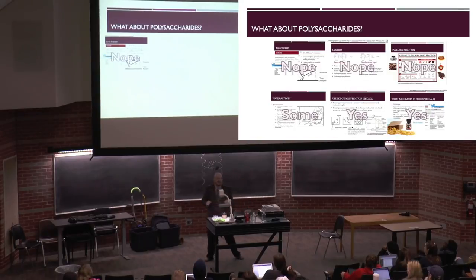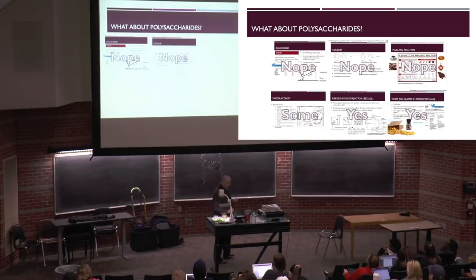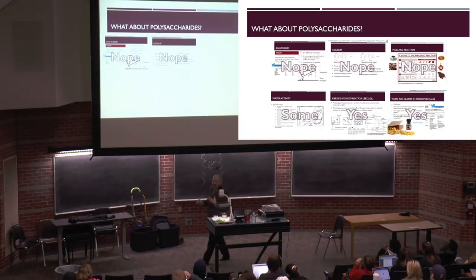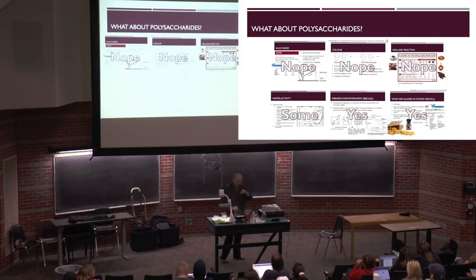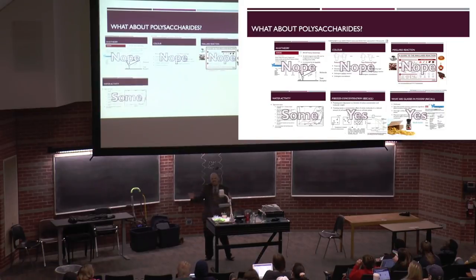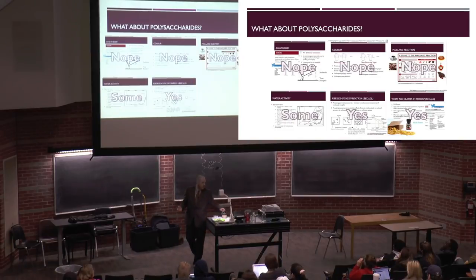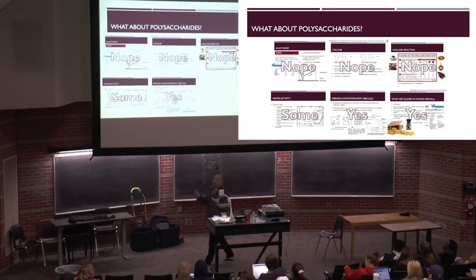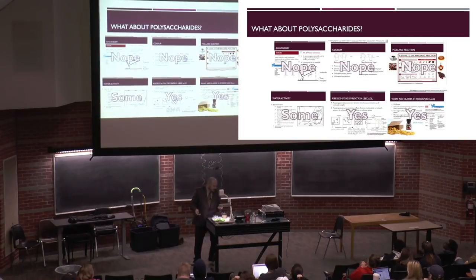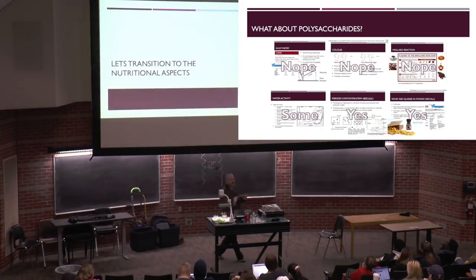When we talk about polysaccharides, they don't provide sweetness or much of a flavor profile, and only participate very minorly in Maillard reaction since each amylose molecule has just one reducing end. They do play a role in binding water and water activity, have a huge role in freeze concentration—you'll always see polysaccharides added to structure ice cream—and they can produce glassy states. On Thursday, we'll transition into what all this means from a biological and nutritional profile perspective.